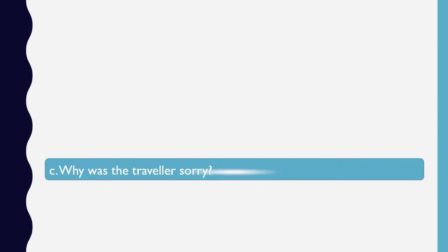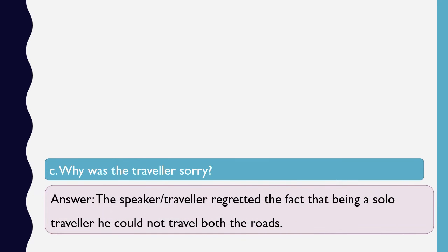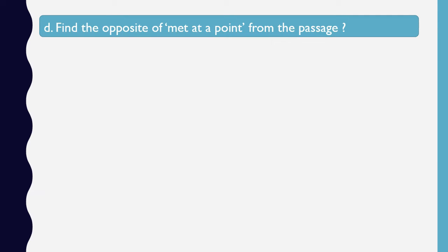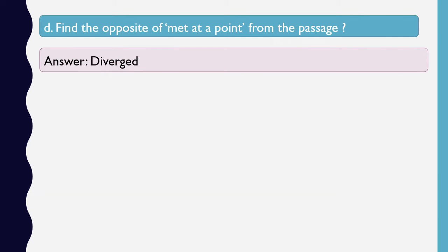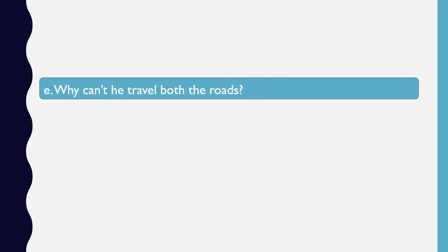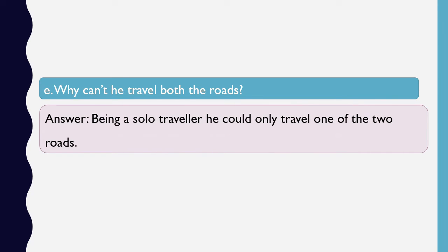Why was the traveller sorry? The speaker or the traveller regretted or felt sorry about the fact that being a solo traveller, he could not travel both the roads. Find the opposite of 'met at a point' from the passage — the answer is 'diverged'. Why can't he travel both the roads? Being a solo traveller, he could only travel one of the two roads.